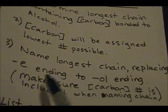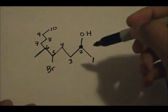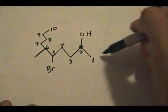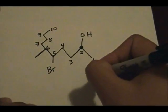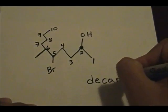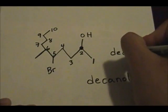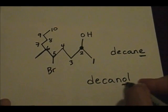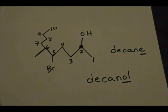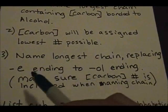Third step states to name the longest chain, replacing the -e ending with an -ol ending. So it will be decane, but we change the -e to -ol, giving us decanol. So we replace the -e with -ol. The first part of step three is satisfied — we have named the longest chain with the correct ending.